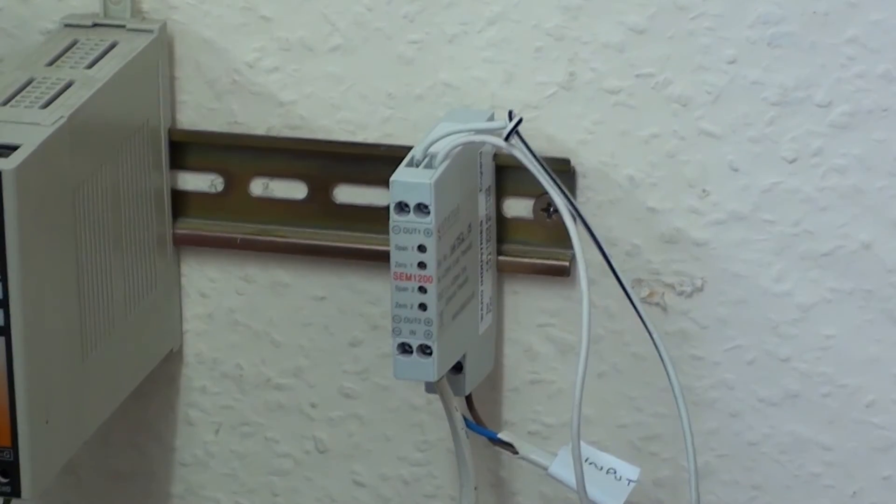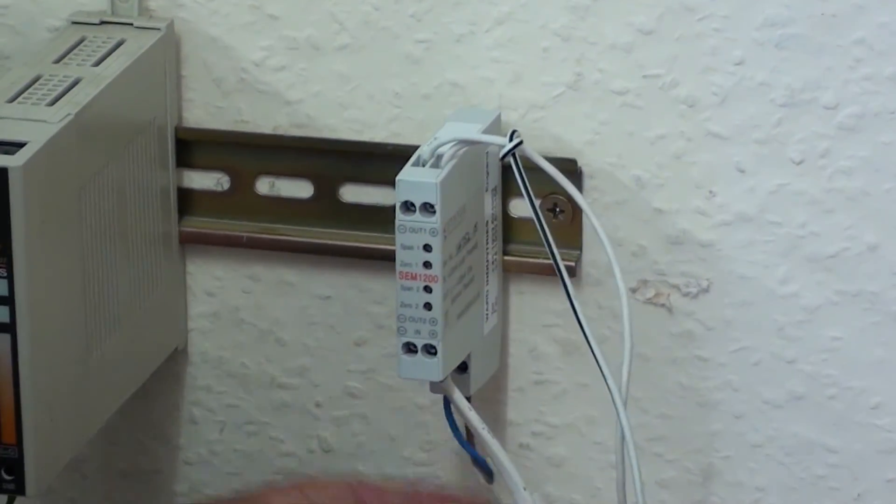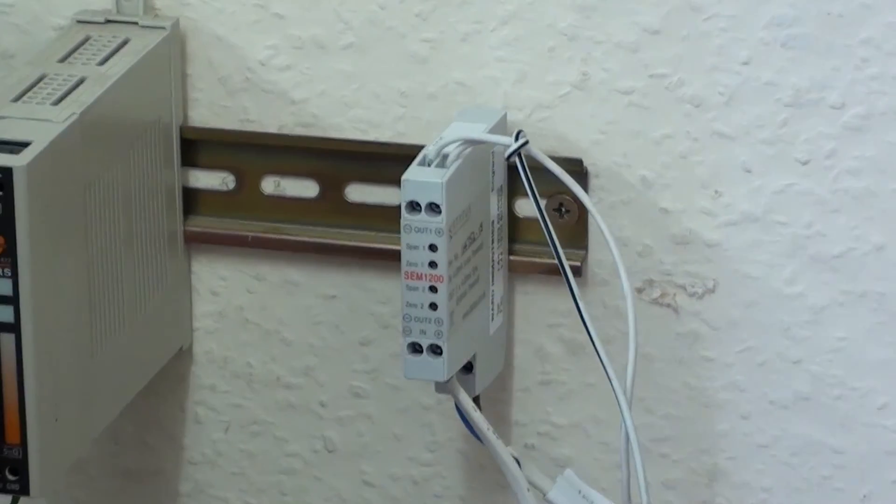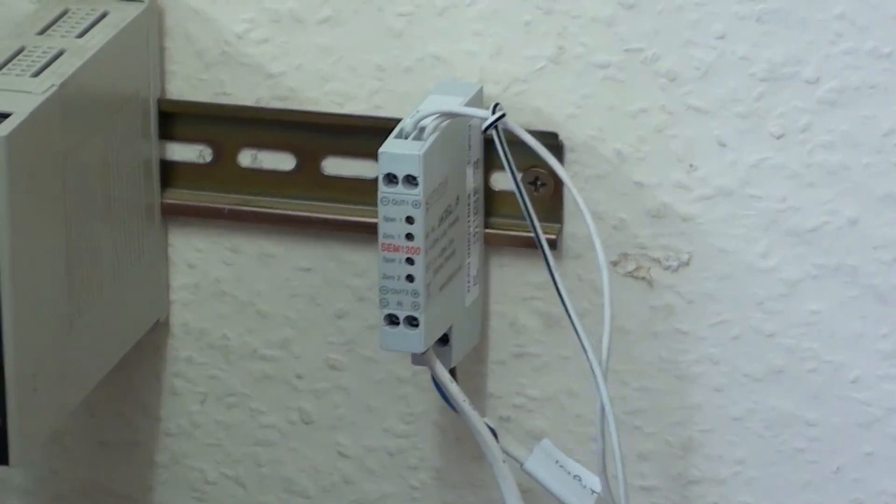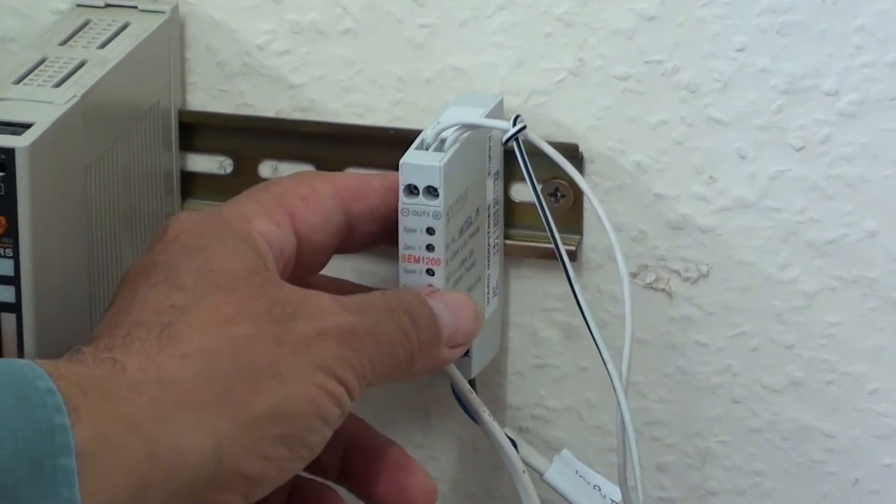SEM1200 is a DIN rail mounted unit, so I've installed it on a piece of DIN rail. To recap, input signal 4 to 20 milliamps into the SEM1200.